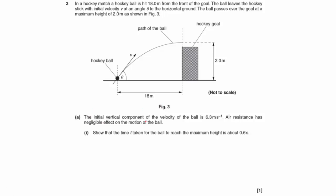The initial vertical component of the velocity of the ball is 6.3 metres per second. Air resistance has a negligible effect on the motion of the ball, and we've got to show that the time t taken for the ball to reach the maximum height is about 0.6 seconds.